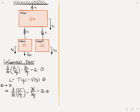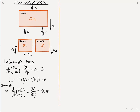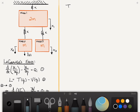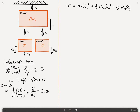We begin by writing an expression for the kinetic energy of the system. The kinetic energy T is simply the sum of the kinetic energies of each of the three masses. For mass 1, it's one half times the mass — which is one half times 2m, giving us m — times the velocity squared, so that would be x1-dot squared. Plus for the second mass, one half m2 x2-dot squared, and for the third mass, one half m3 x3-dot squared. We'll call that equation 4.